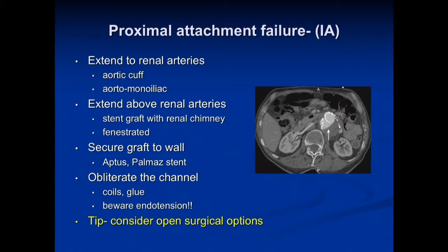As a tip, you need to consider what is your surgical bailout. We already know that it is difficult to convert these patients to open repair. If you place half a dozen endo staples and then some cyanoacrylate glue and some coils in that neck and then put in a Palma stent, that's going to make open repair very challenging.